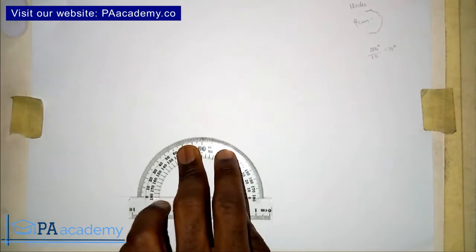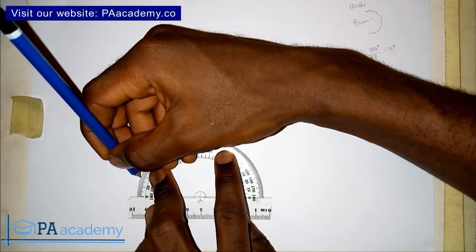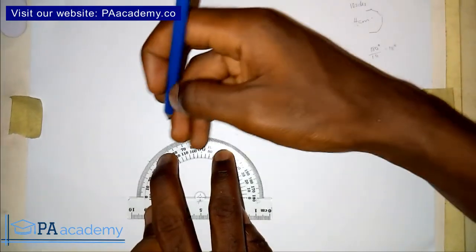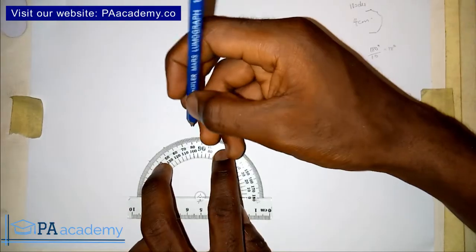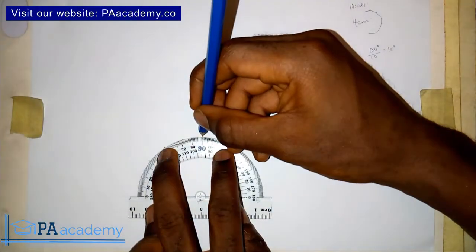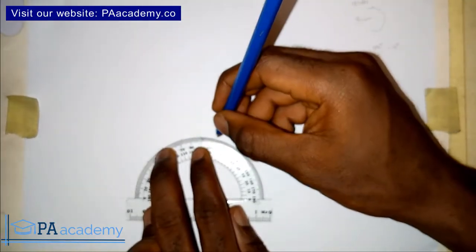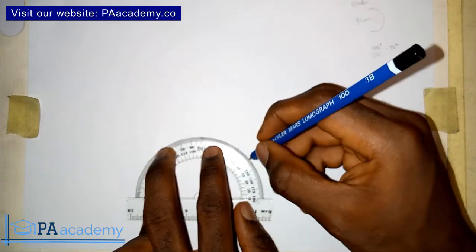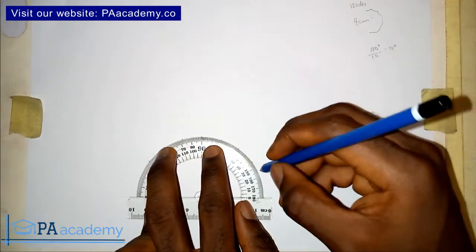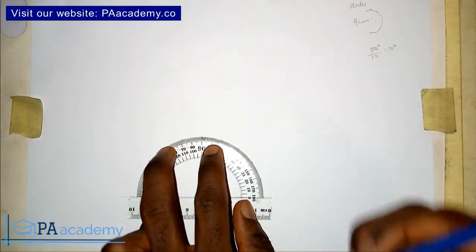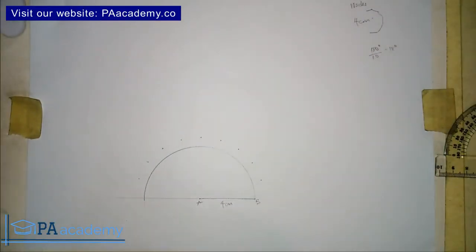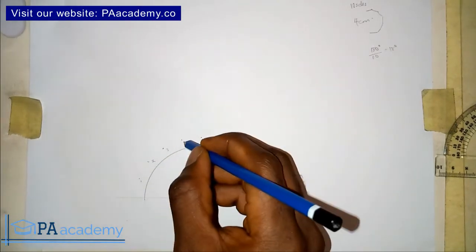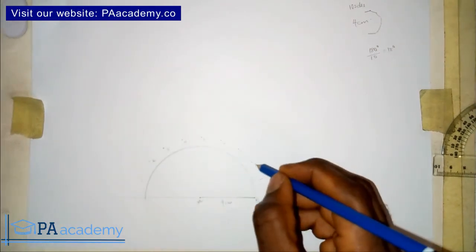Mark at 18°, then 36°, 54°, 72°, 90°, 108°, 126°, 144°, 162°, and 180°. Remove the protractor and number the points 1 through 10, starting from the first mark at 18° through to 180°. We've now divided the semicircle into 10 equal parts.